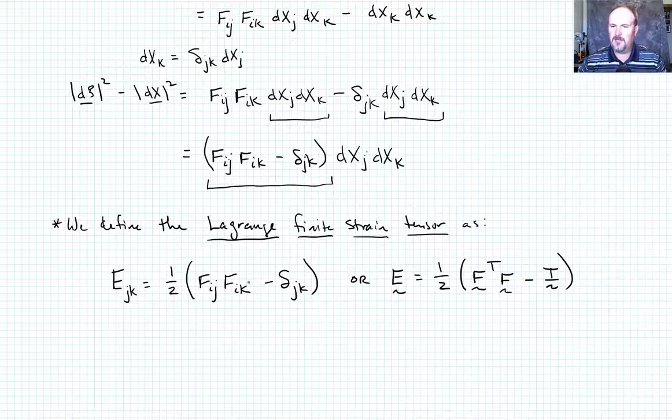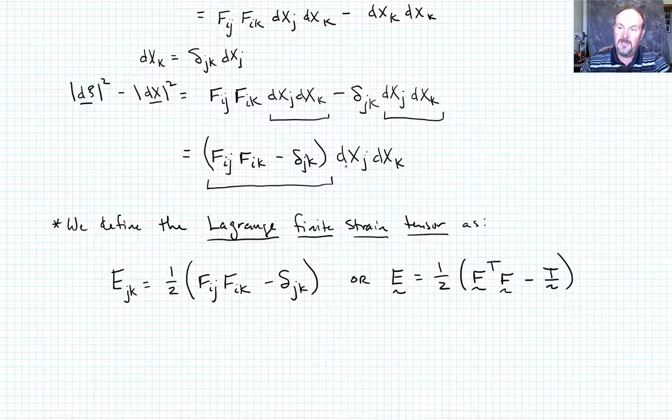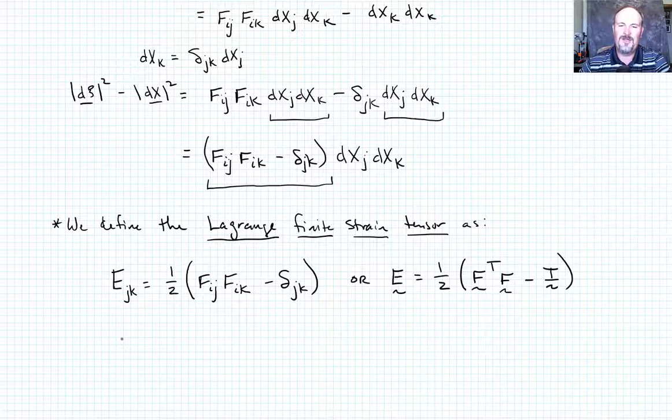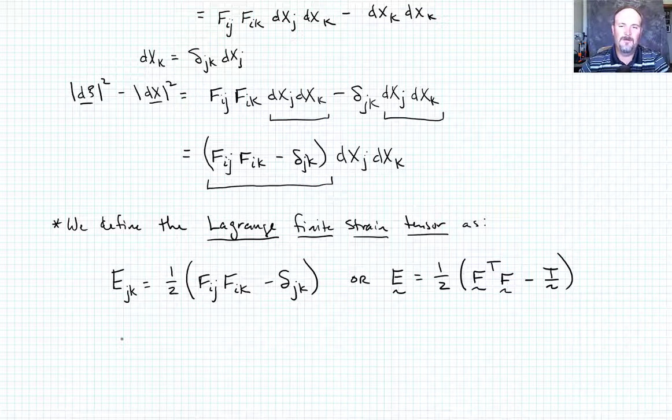So this is the Lagrange finite strain tensor. What does it do? Well, we know that it tells us if we multiply that by, in tensor fashion, by the differential vector length, it gives us some measure of the change in that length. And you're going, well, that's again not helpful. I want delta L over L. Well, great. You're going to get delta L over L, but we need to do a few more things to specialize this strain tensor. We actually need to go to the small strain case to be able to show that. So that'll be the topic of our next module.